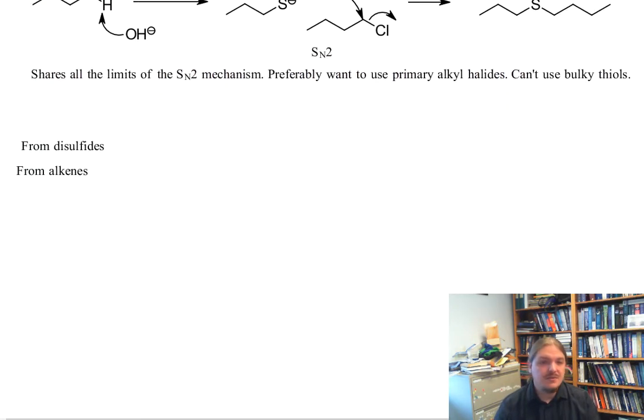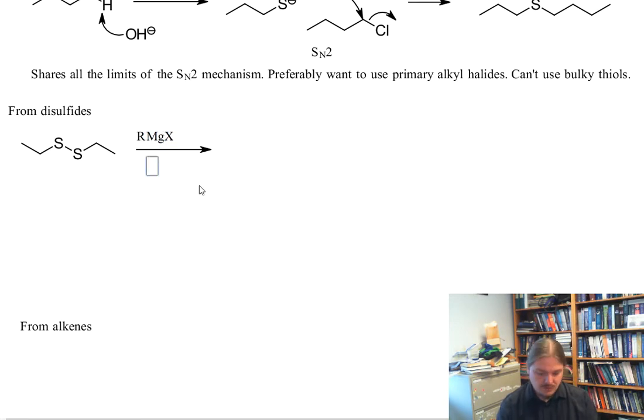So the other two methods in here give us a way around some of these limitations. For example, in the first one from disulfides, it turns out that disulfides are actually a pretty good electrophile for a variety of nucleophiles. And so if you react disulfides with a Grignard reagent, or the corresponding organolithium reagent, you can get a sulfide.